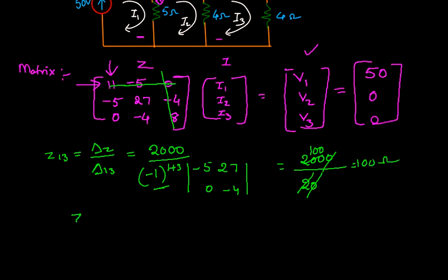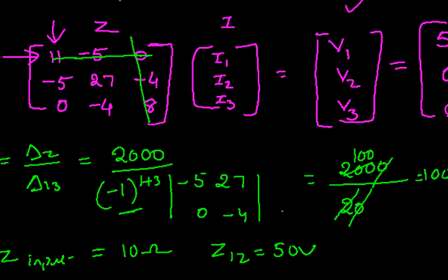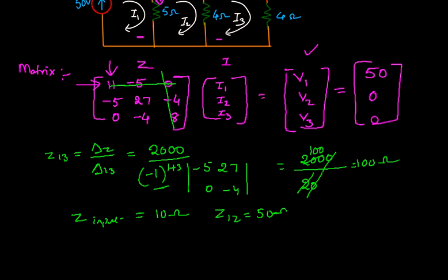We know that z input is equals to 10 ohms, z12 is equals to 50 ohms.